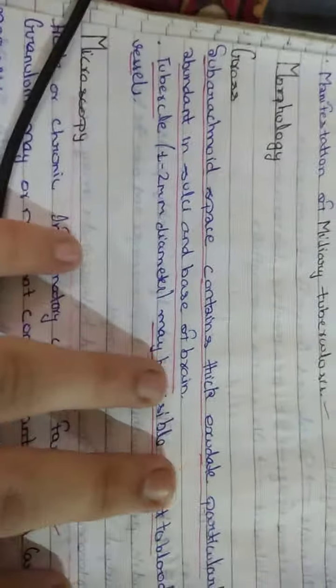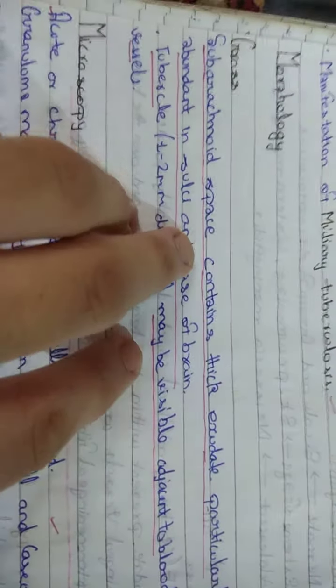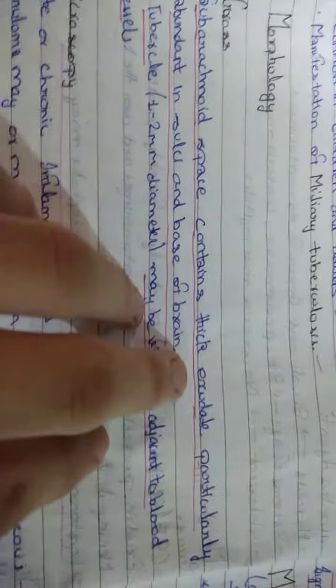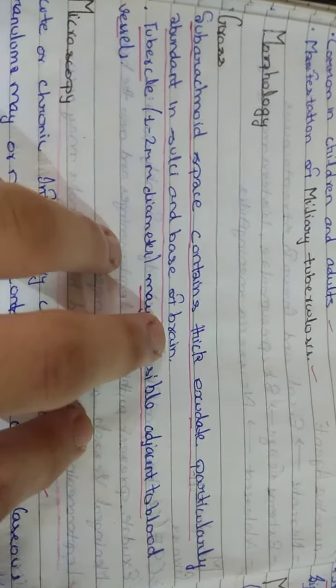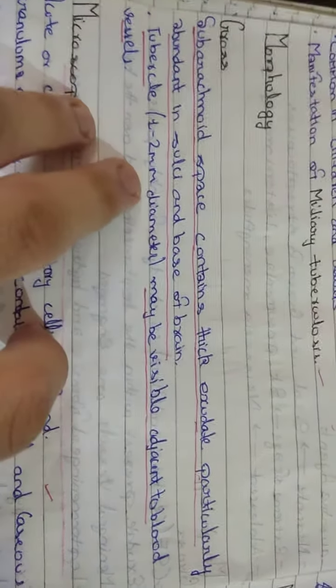Morphology: in gross, subarachnoid space contains thick exudate, particularly abundant in sulci and base of brain. Tubercles may be visible adjacent to blood vessels.